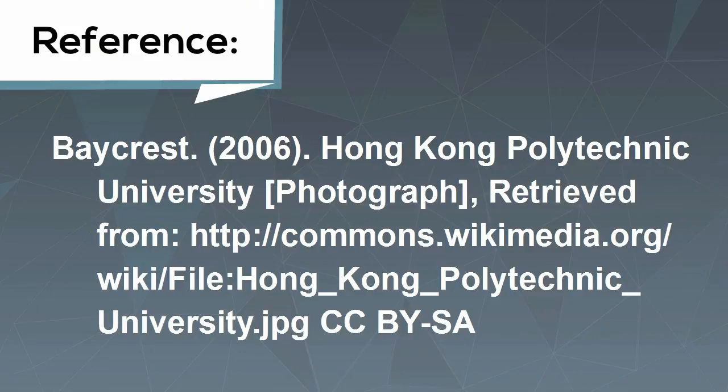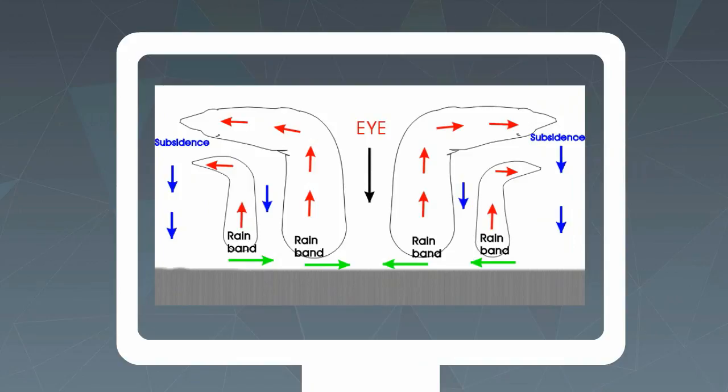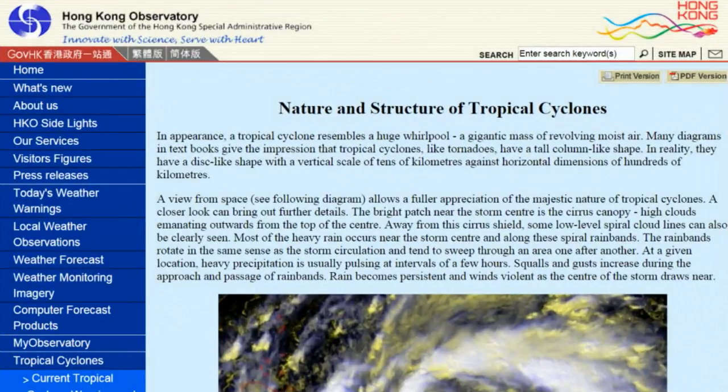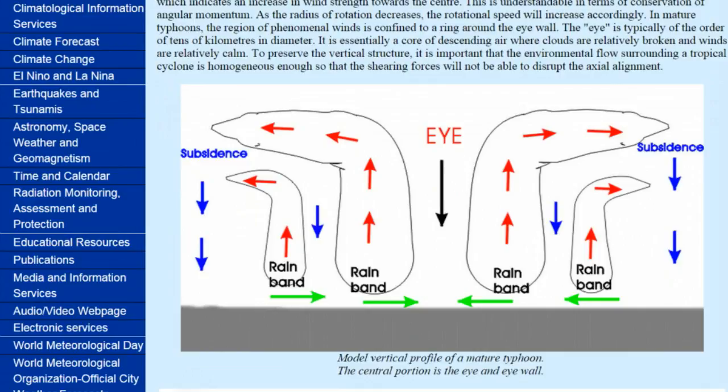However, not all images have this information. You may want to use a diagram of a typhoon. You have located it on the Hong Kong Observatory website. The format is a diagram, but unlike the previous example, there's no obvious information about the author.